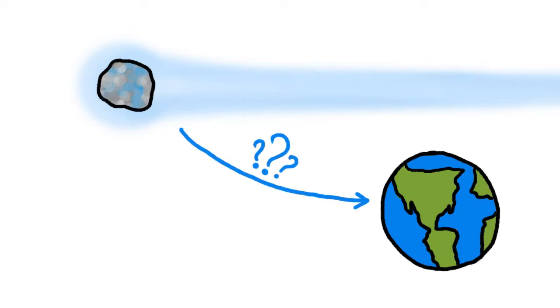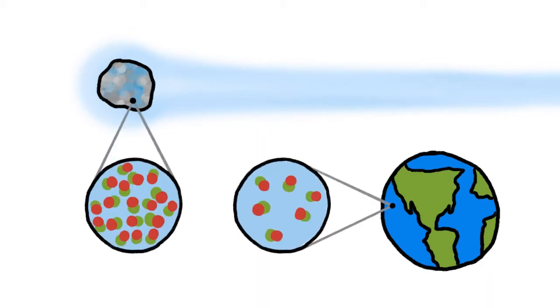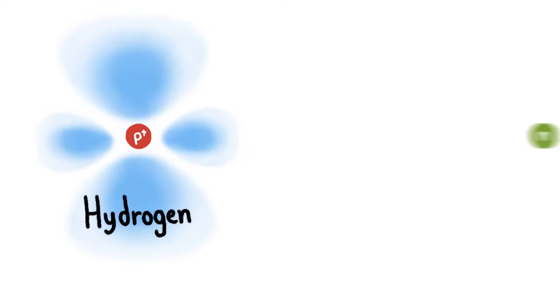The dirty ice balls we call comets are a logical candidate for the source of our water, but were ruled out when we discovered that they were far richer in heavy hydrogen than Earth water. Heavy hydrogen has a neutron as well as a proton in its nucleus.